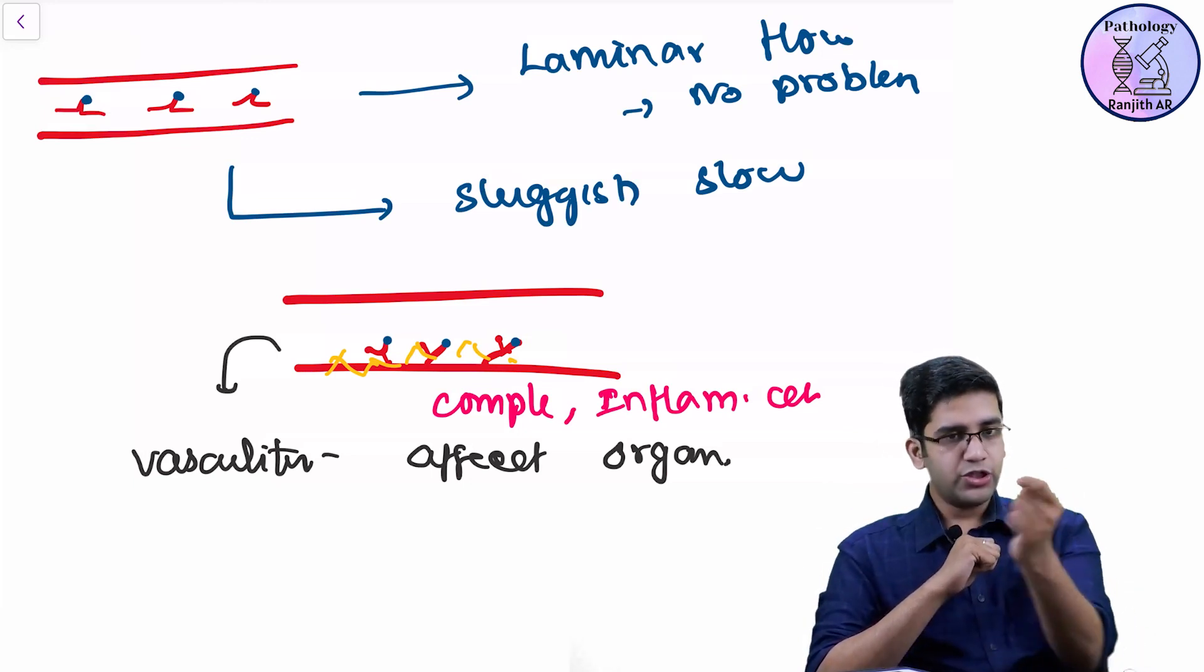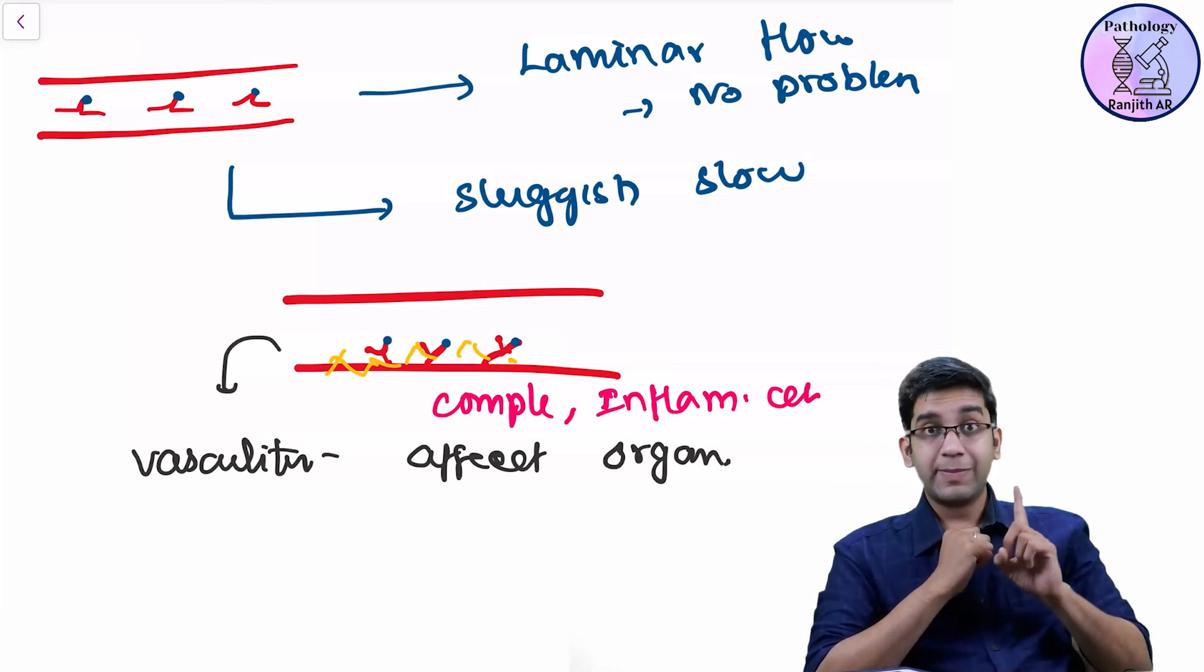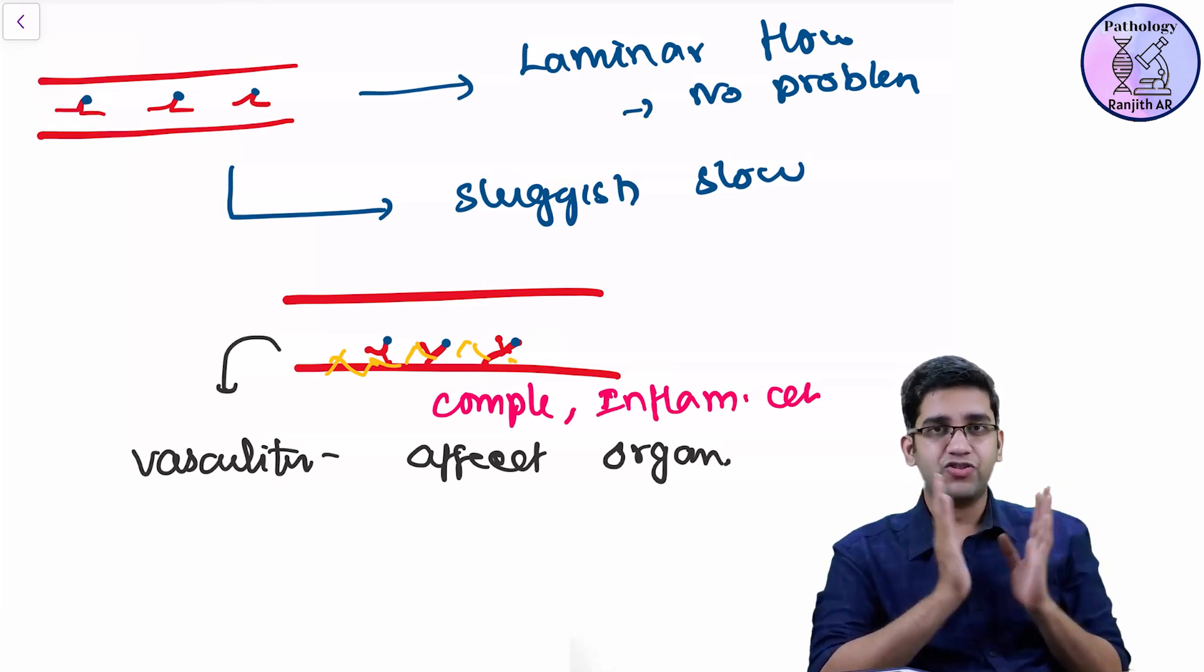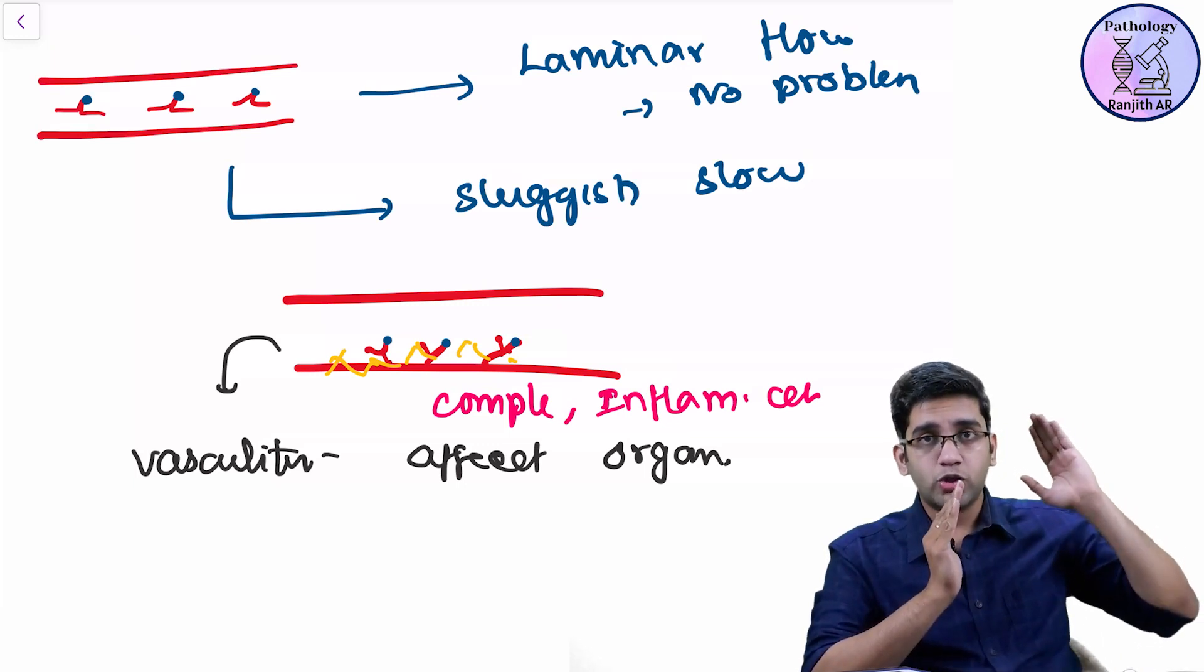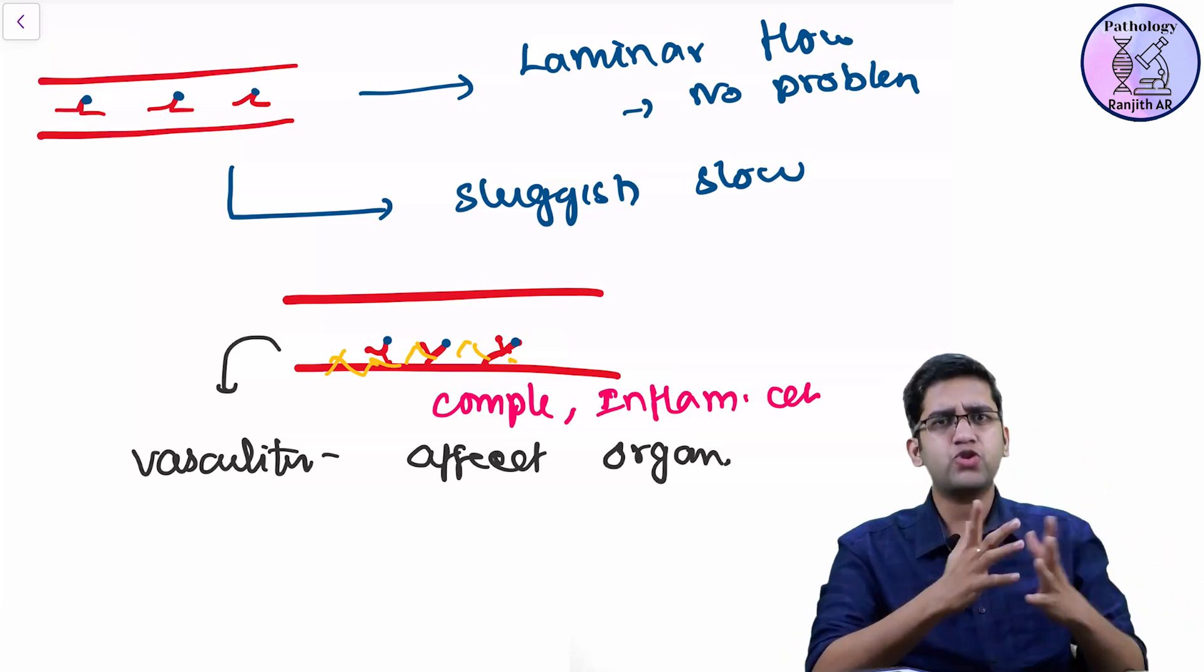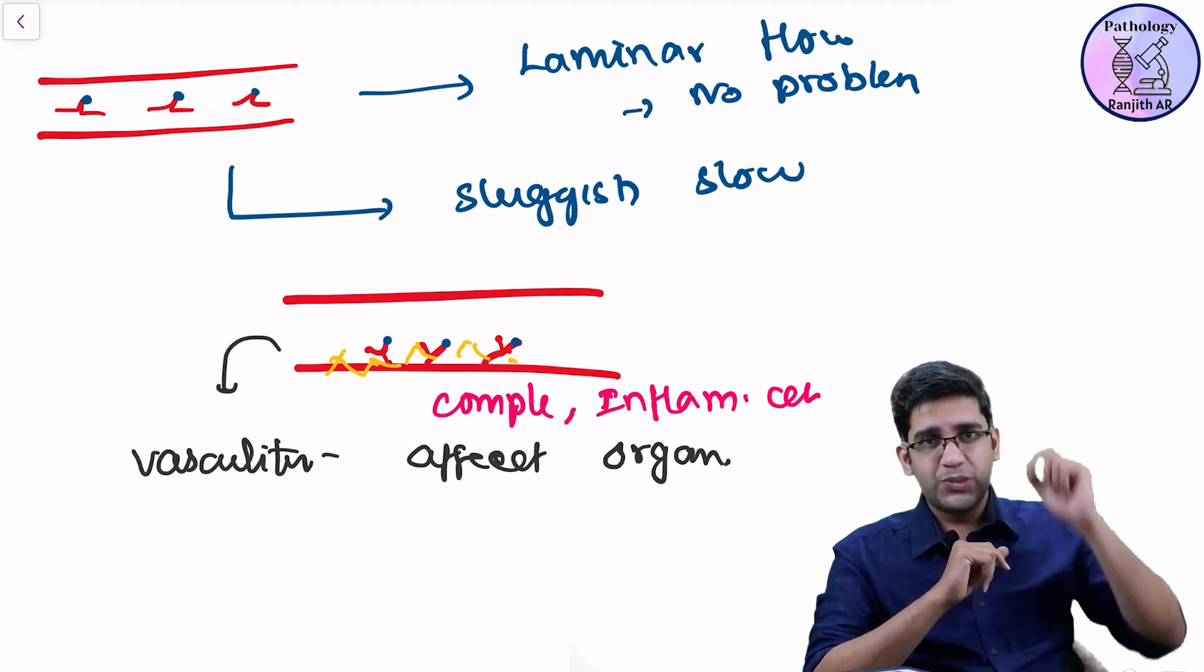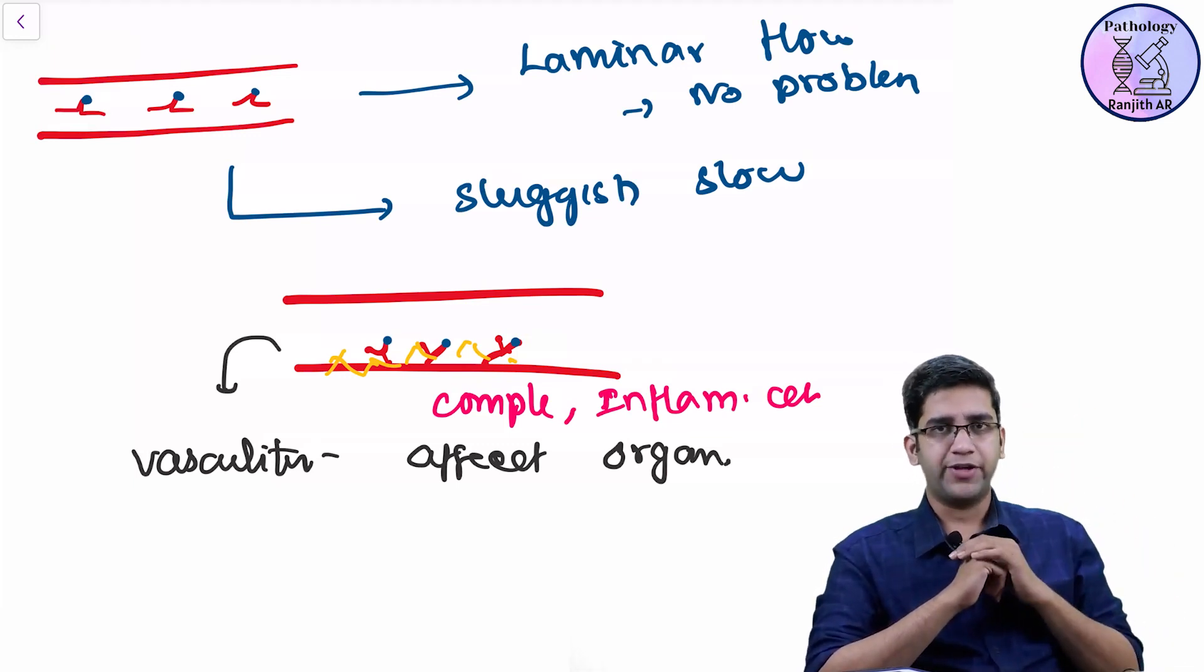So when I have a U-turn, or when my capillary bends like this, when my capillary bends like this, I have a trouble. Because the flow will automatically come down. That's natural hemodynamics. The flow will come down and it will get deposited. It will cause damage.